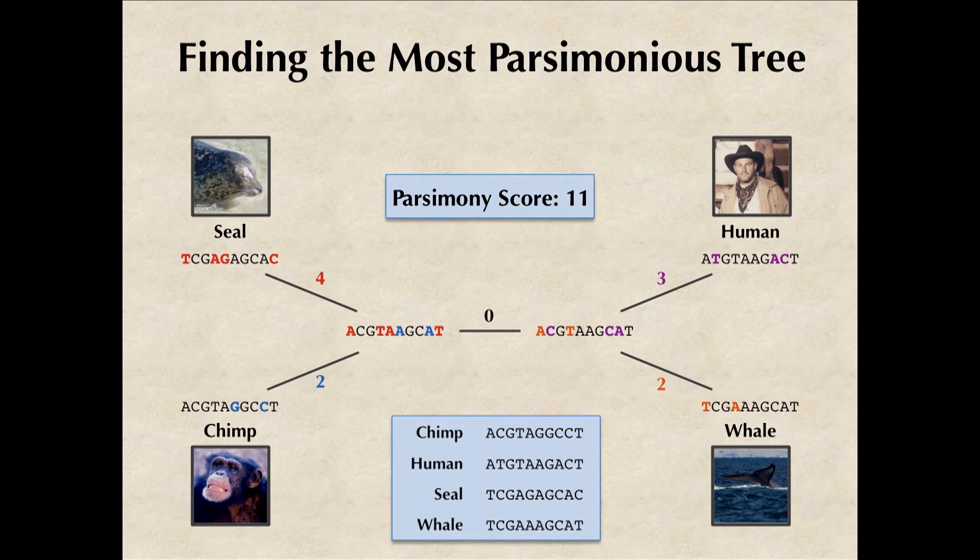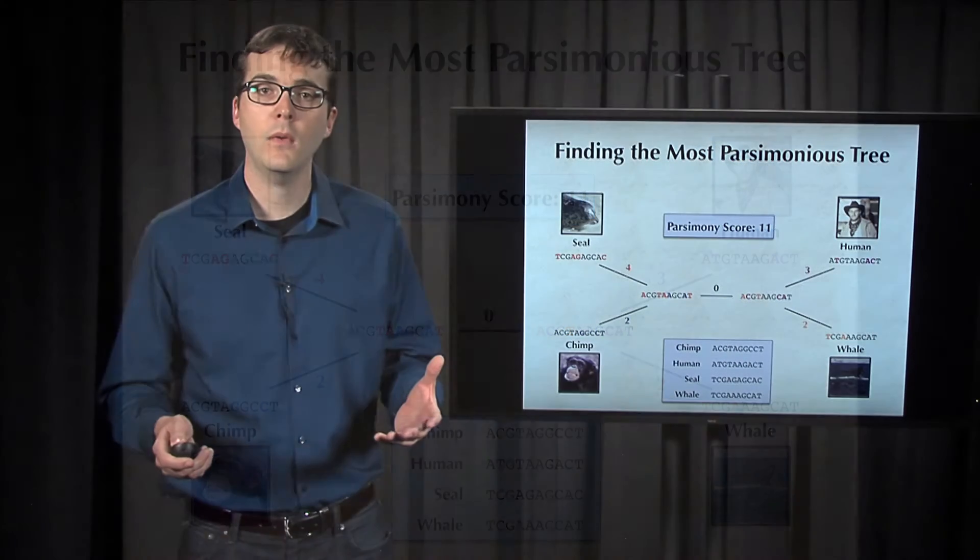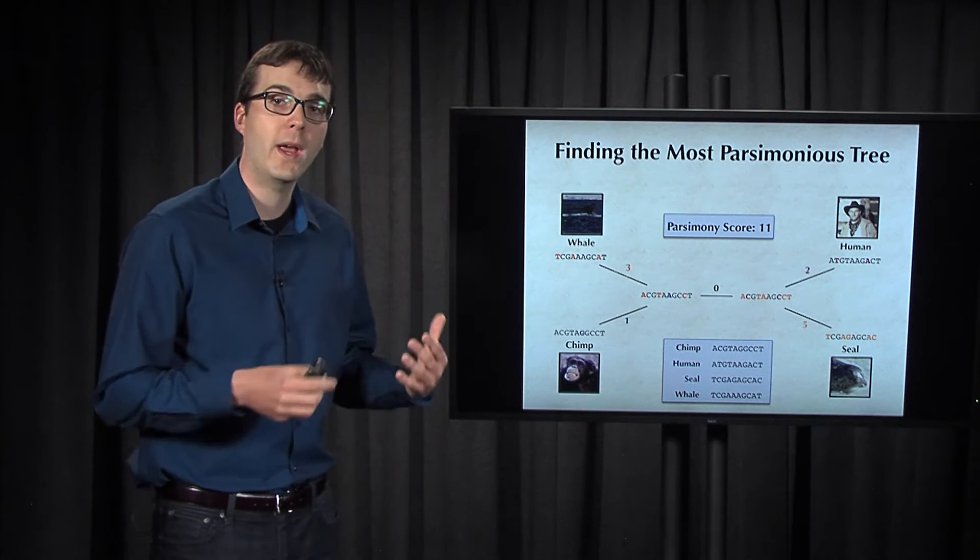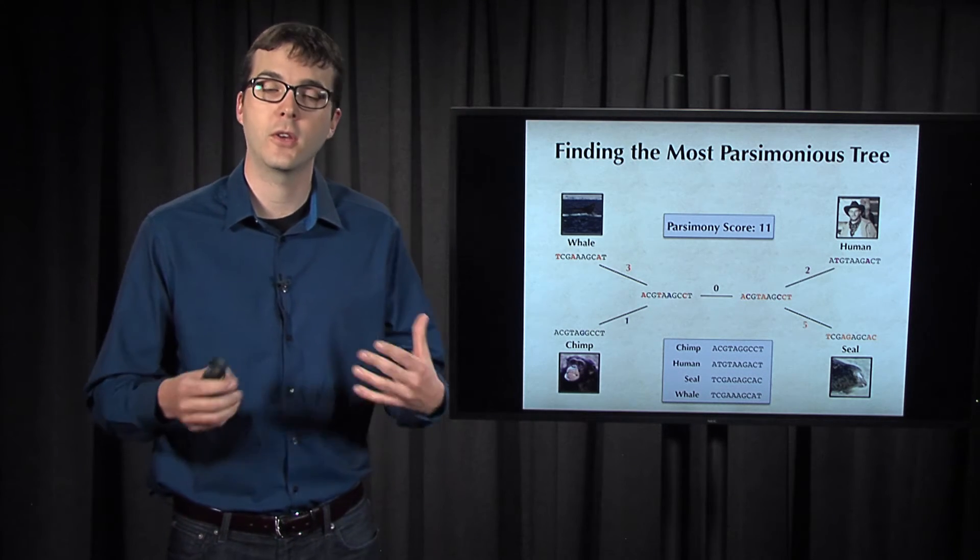It seems unlikely, but there's nothing preventing chimp and seal from being neighbors instead. We need to find the smallest parsimony score for this unrooted tree as well, which is 11. We also need to find the smallest parsimony score for the tree in which chimp and whale are neighbors, where that score is also 11.